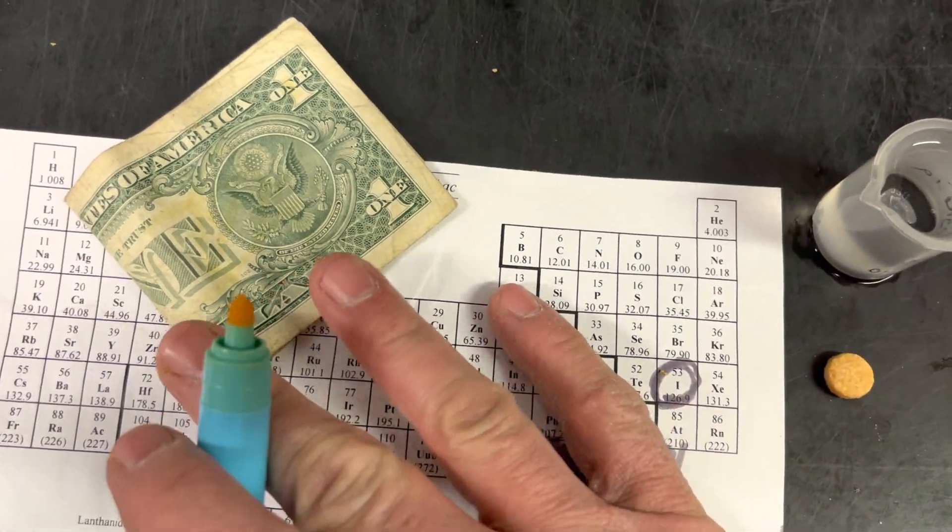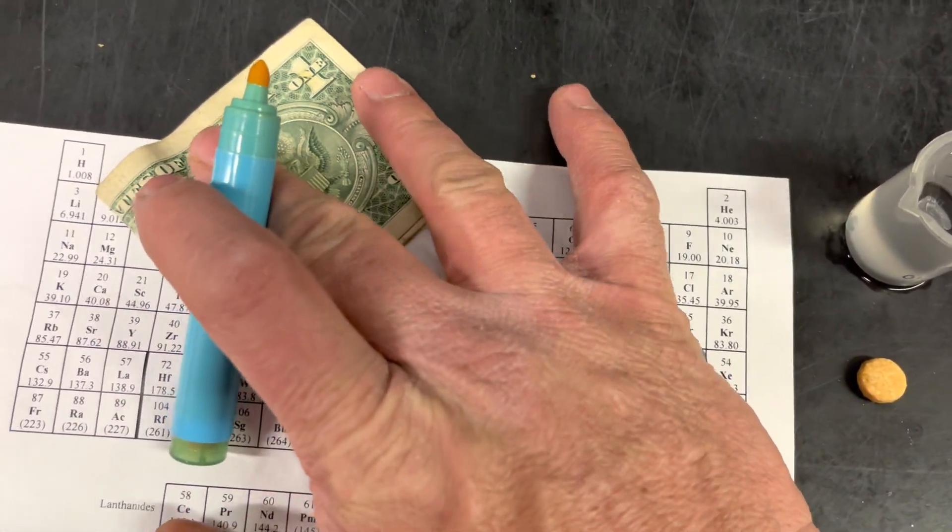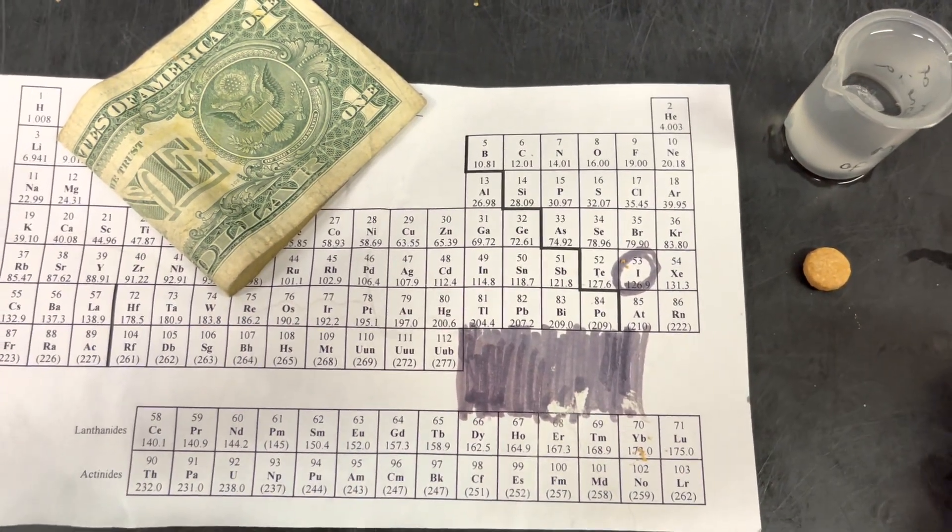That's because the cloth from which the dollar bill is made does not contain too many starch-type molecules.